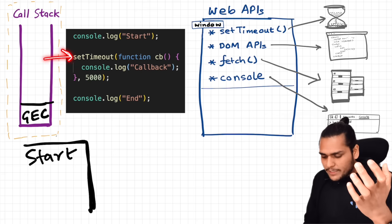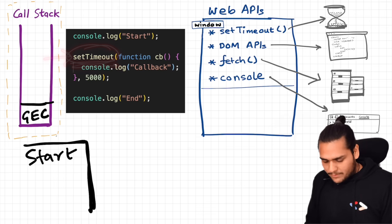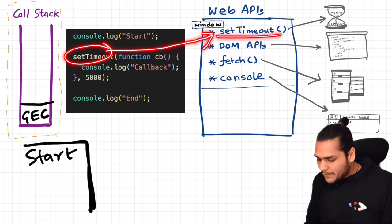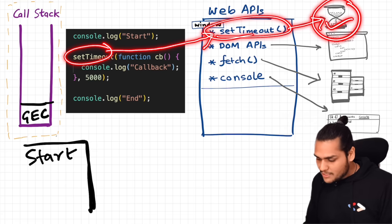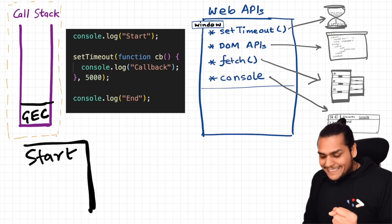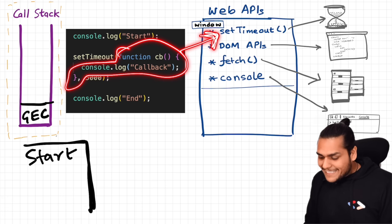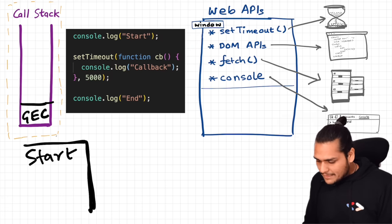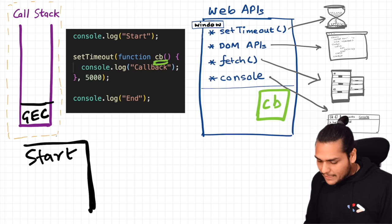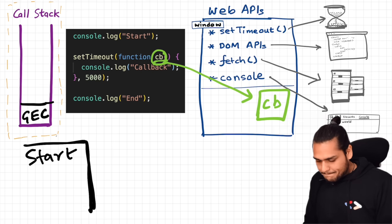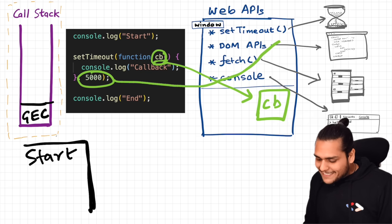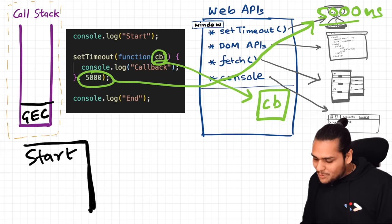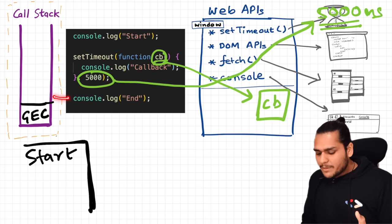Now we move to the next line — this is the setTimeout. The setTimeout will go and call this web API, which gives us access to the timer feature of the browser. It takes a callback function and some delay. When you pass the callback function to setTimeout, it basically registers a callback — let's name it CB. It registers this callback and starts the timer of 5000 milliseconds. And the JavaScript code moves to the next line — it does not wait for anything.